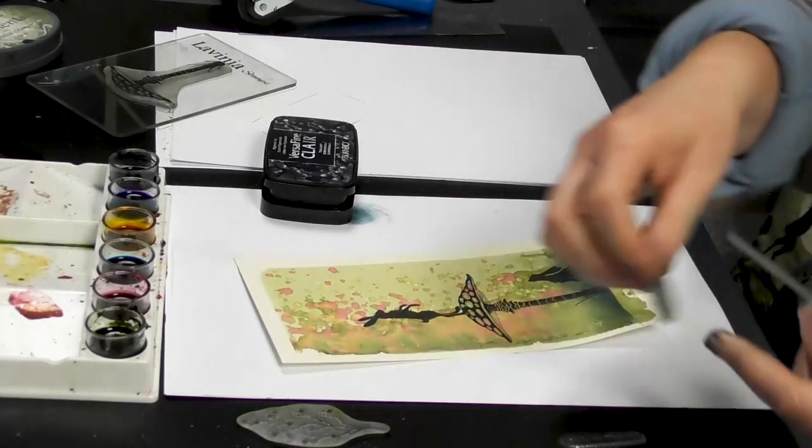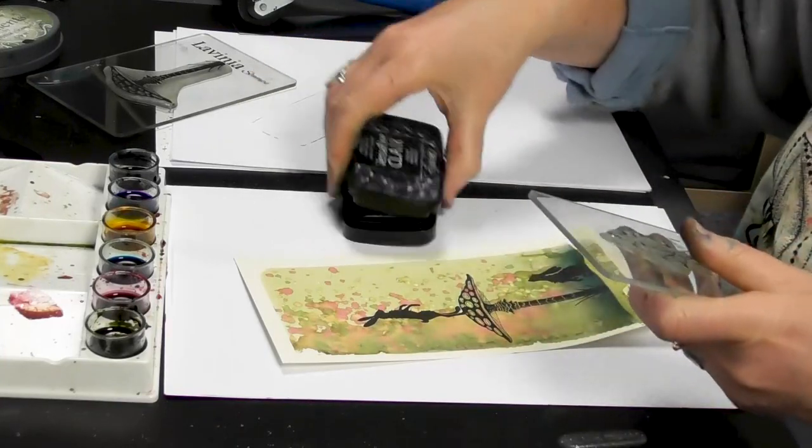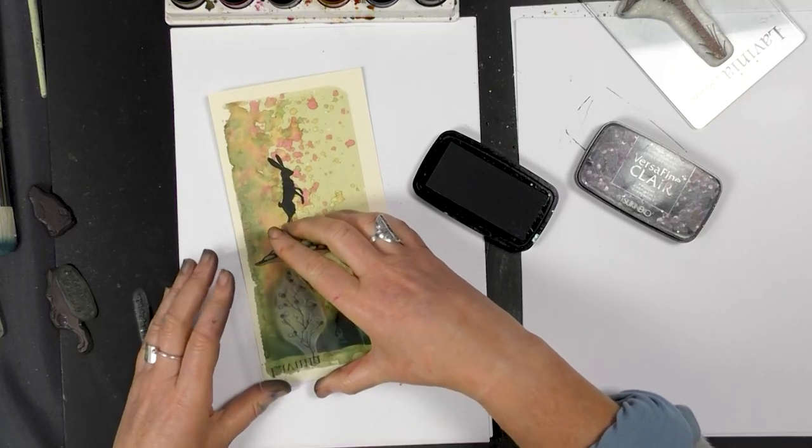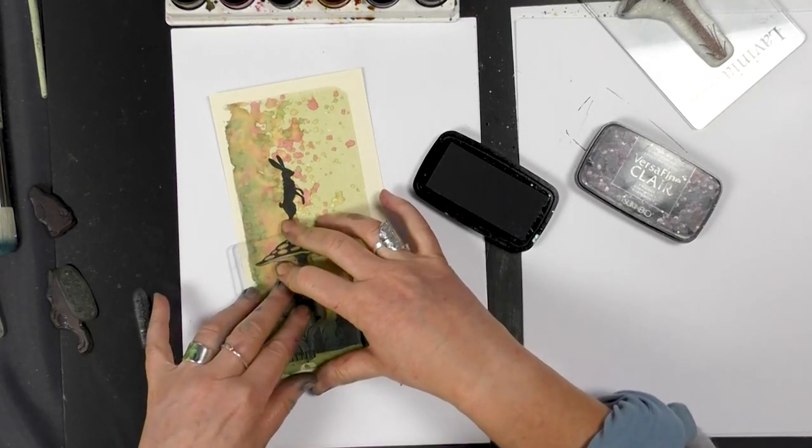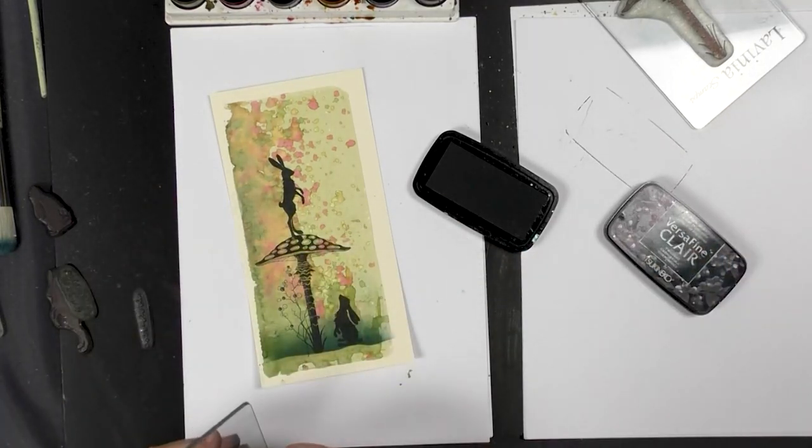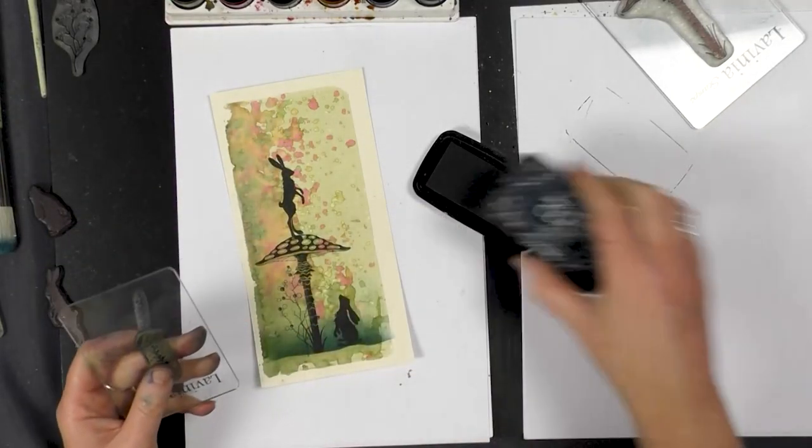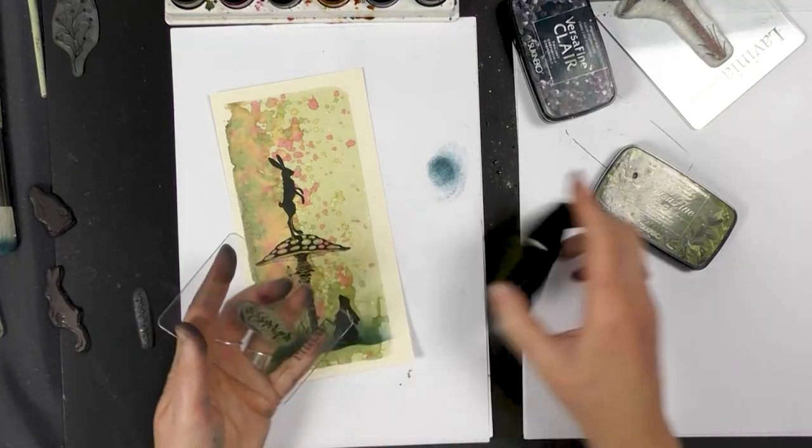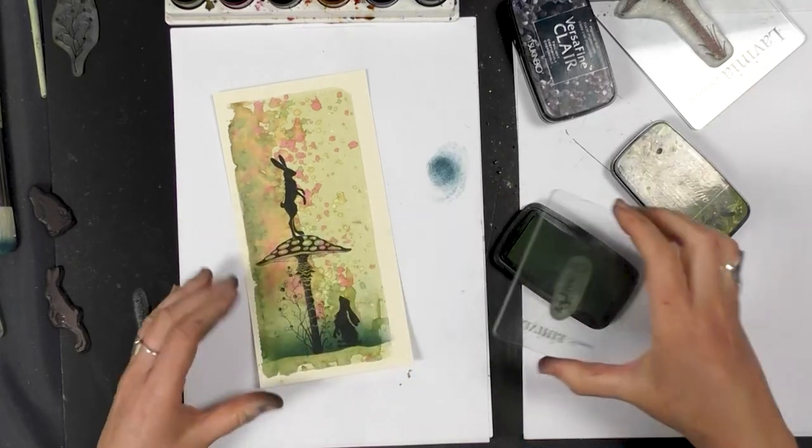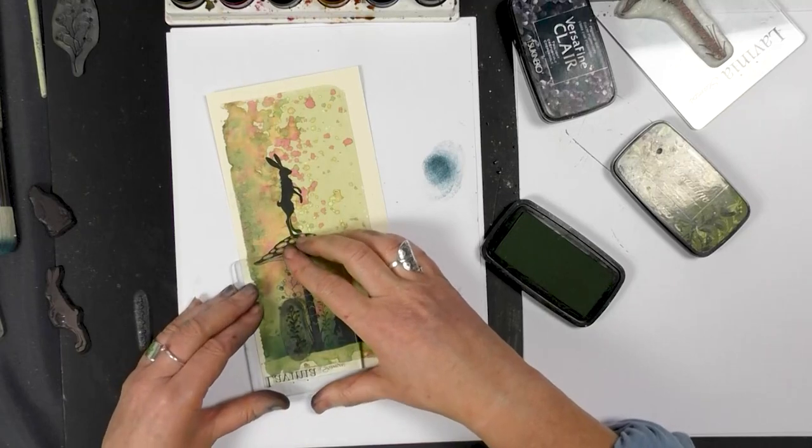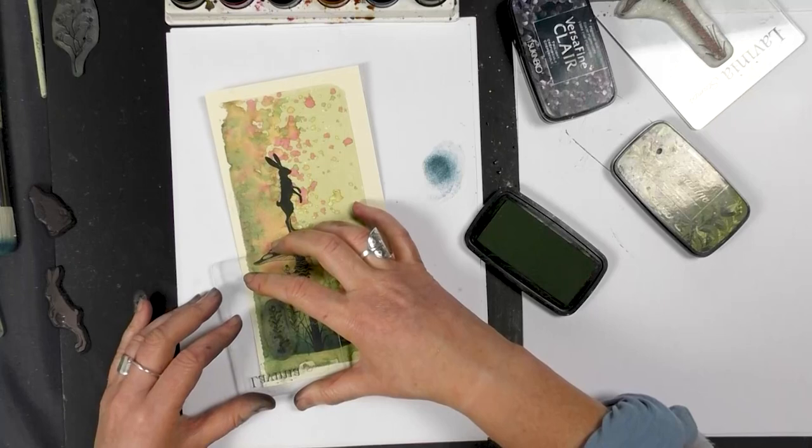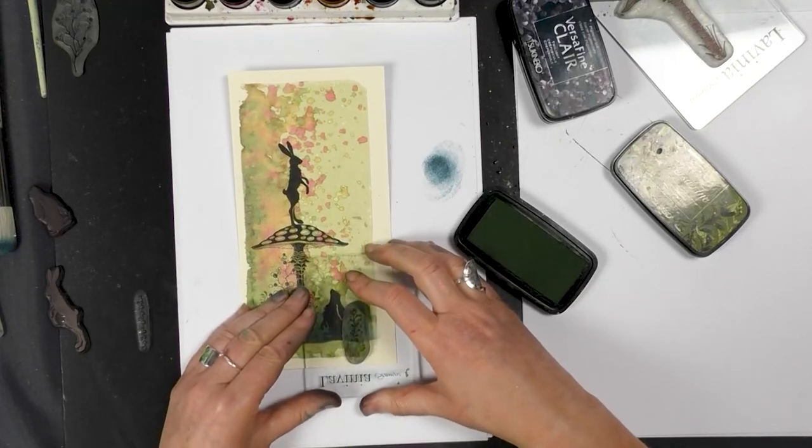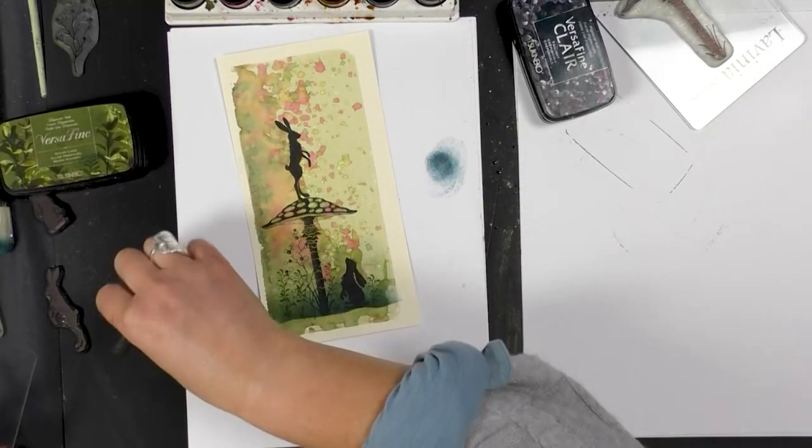Now let's see what else we need. Let's put some little berries at the bottom as well. I'm going to ink up in the twilight. And then I've got another little foliage stamp here. And this time we're inking it in Shady Lane.